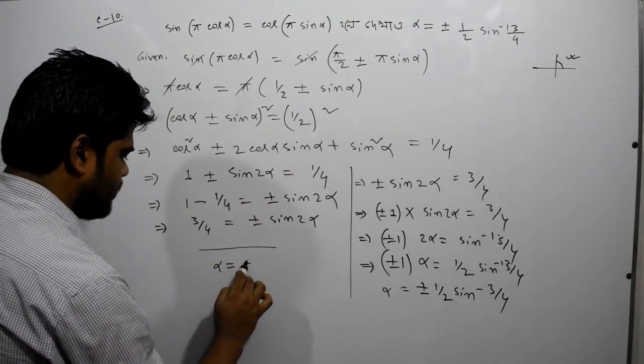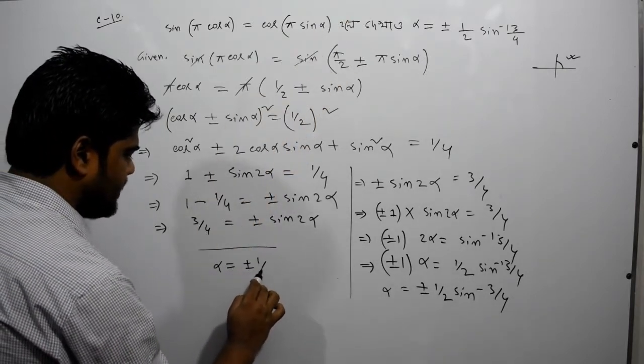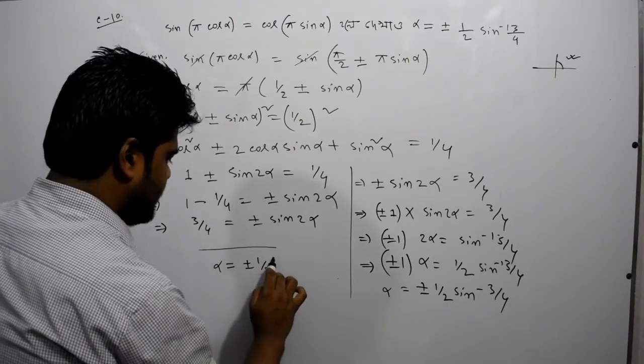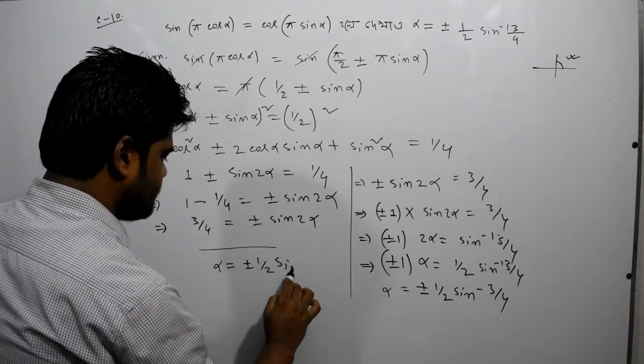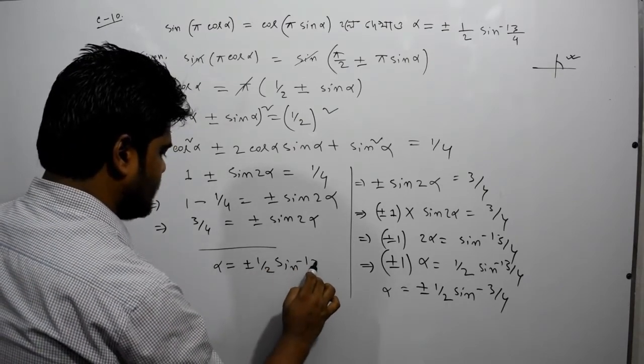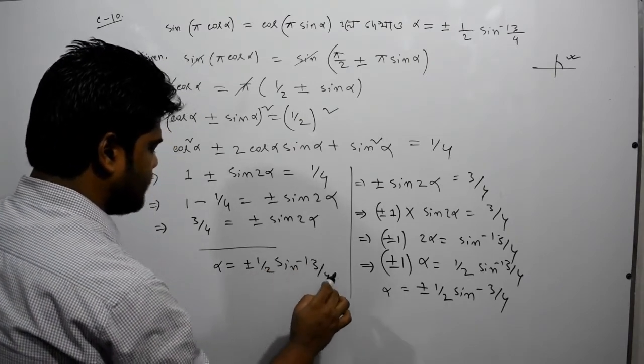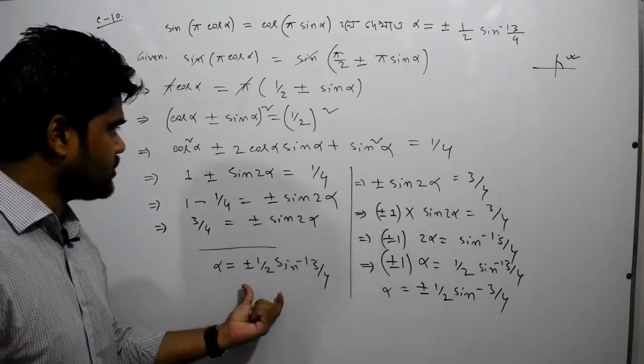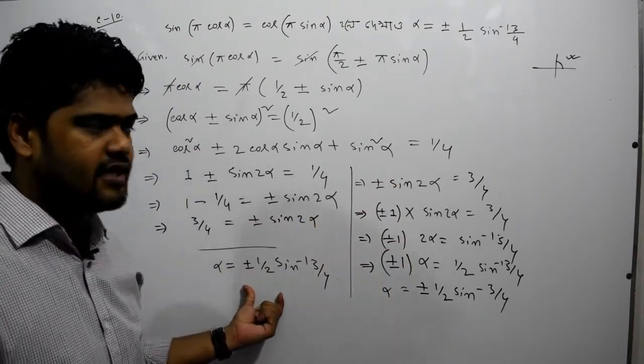Alpha equals plus minus half sin inverse 3 by 4. You can write it.